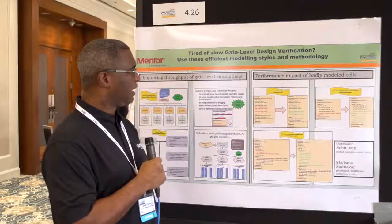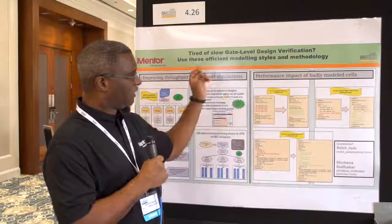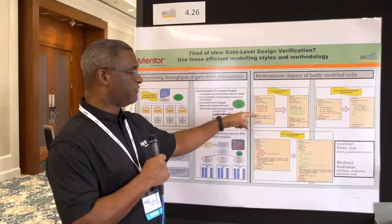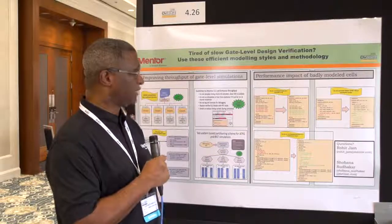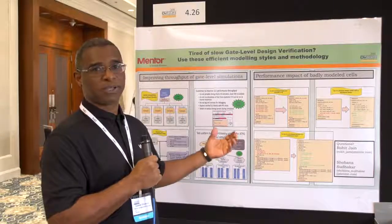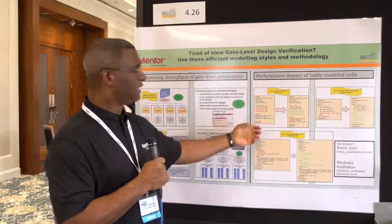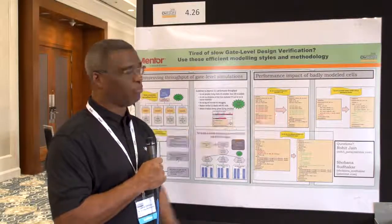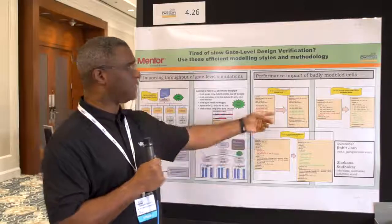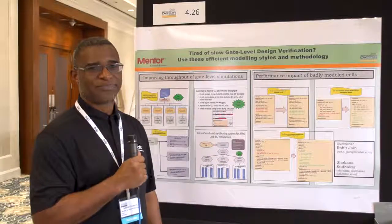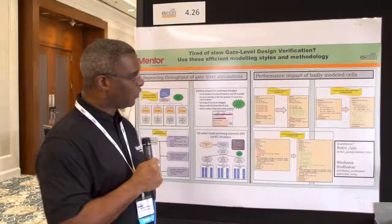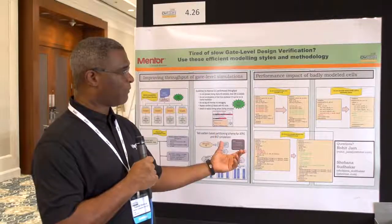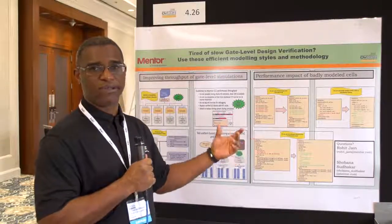On the left here, you have a cell model whose output port is being read back in the functional part of the model itself. That causes some tools not to optimize the cell efficiently. A simple rewrite where you have a wire that can be read and written to, and then assigning that wire to the output port, can allow this cell to be optimized far more efficiently. The other examples show similar ideas where a particular type of coding may prevent simulators from optimizing a cell, and a simple change in the way the cell is modeled will enable that cell to be optimized efficiently.